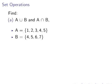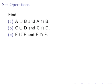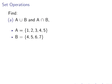Find: in the first instance A union B and A intersection B; second question C union D and C intersection D; and E union F and E intersection F. So just unions and intersections for each pair. Let's look at the first one.